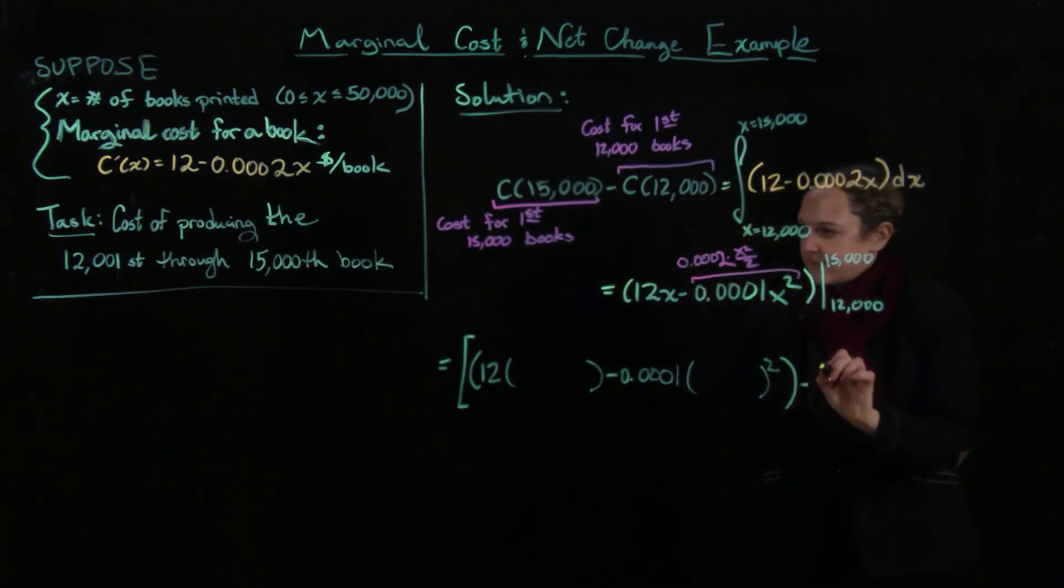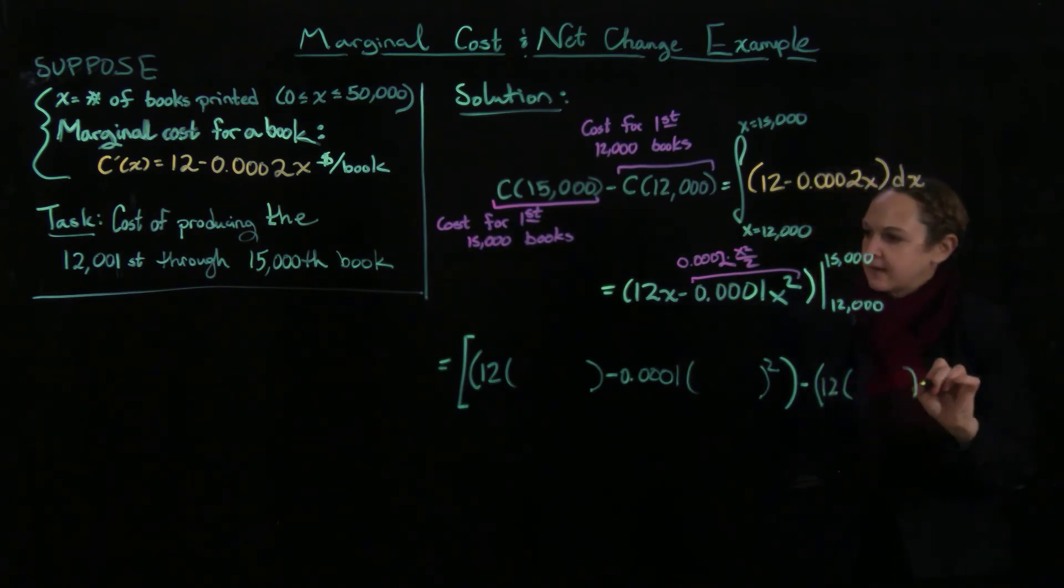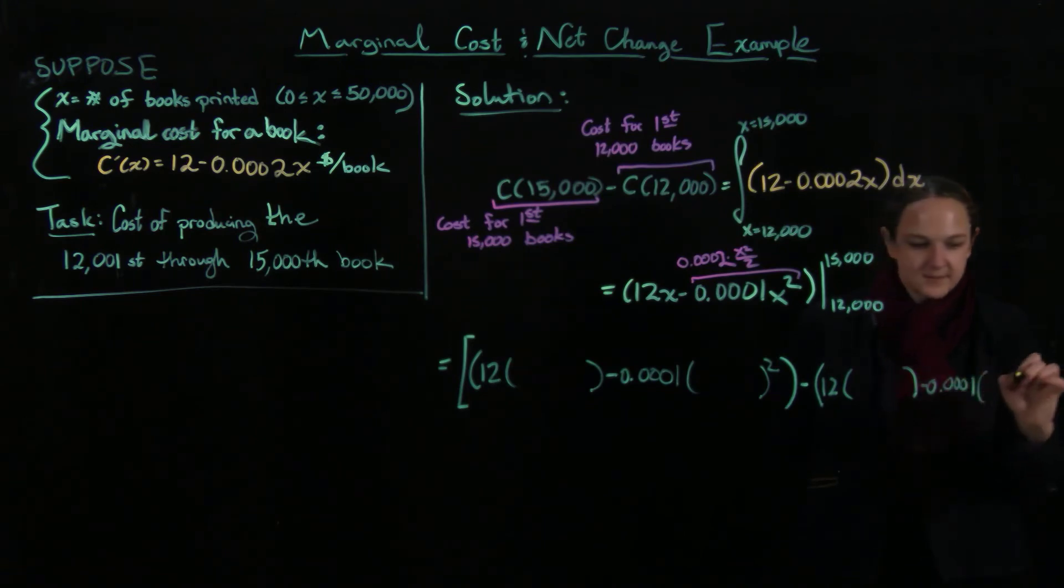Subtract off, and then I have here 12 times 12,000 minus 0.0001 times 12,000 squared.